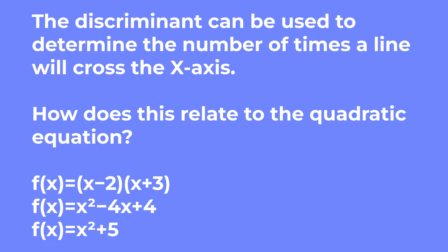Hi everyone, this is Celine from Elucidate. Today we're going to be talking about the quadratic equation and the discriminant. The discriminant can be used to determine the number of times a line will cross the x-axis. How does this relate to the quadratic equation?